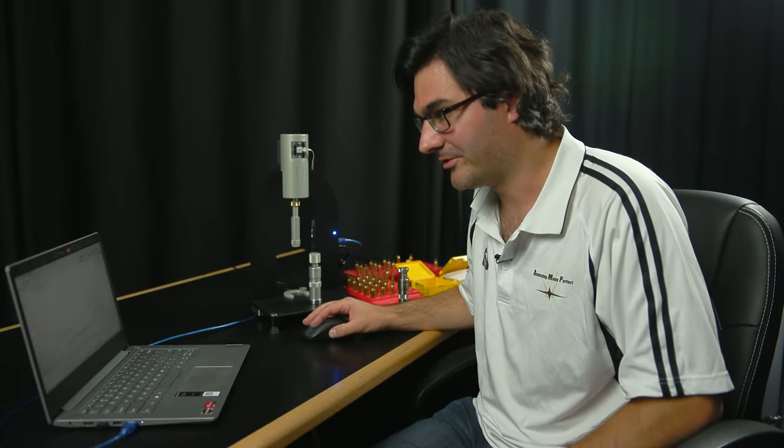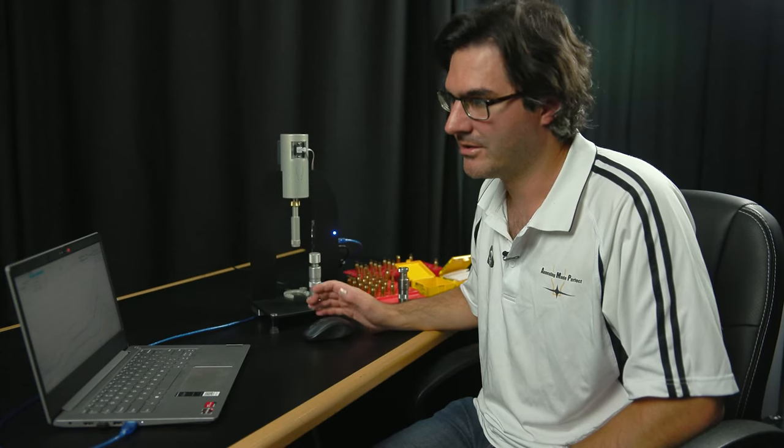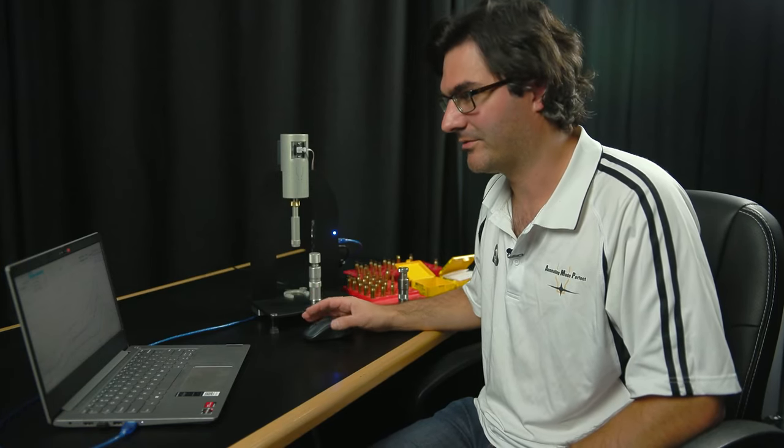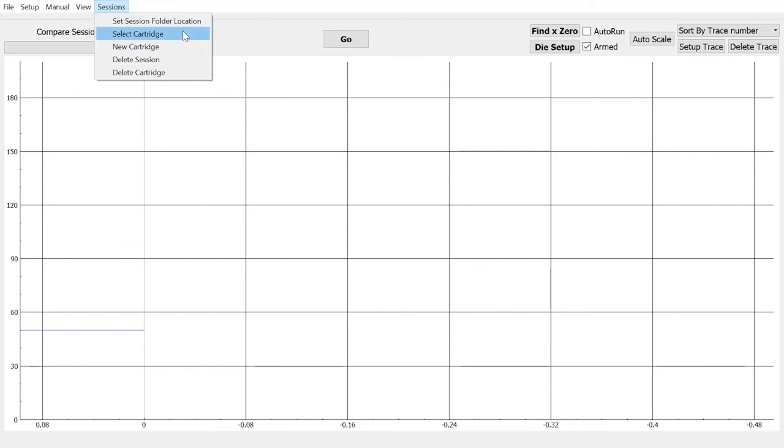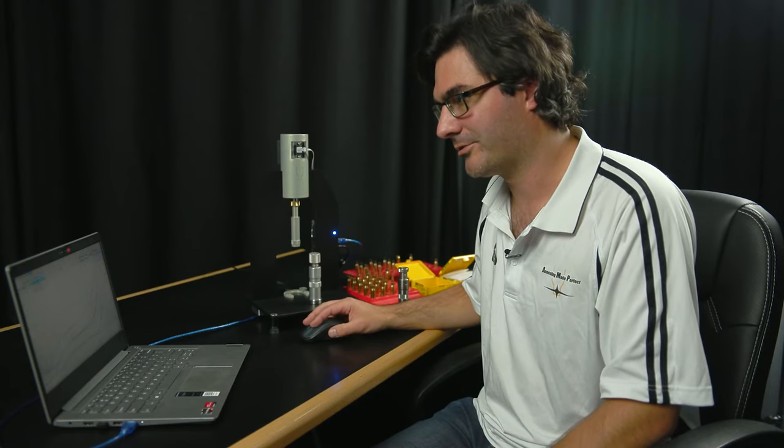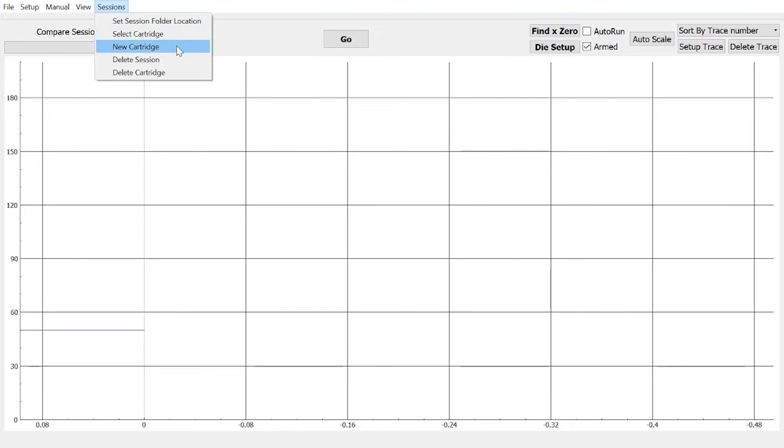Coming across to the sessions selection, we've got set session folder location. That allows you to set the default location of where all the traces and files are saved. Below that, you've got select cartridge. That allows you to select what cartridge you're working with. You can create a new cartridge below that.